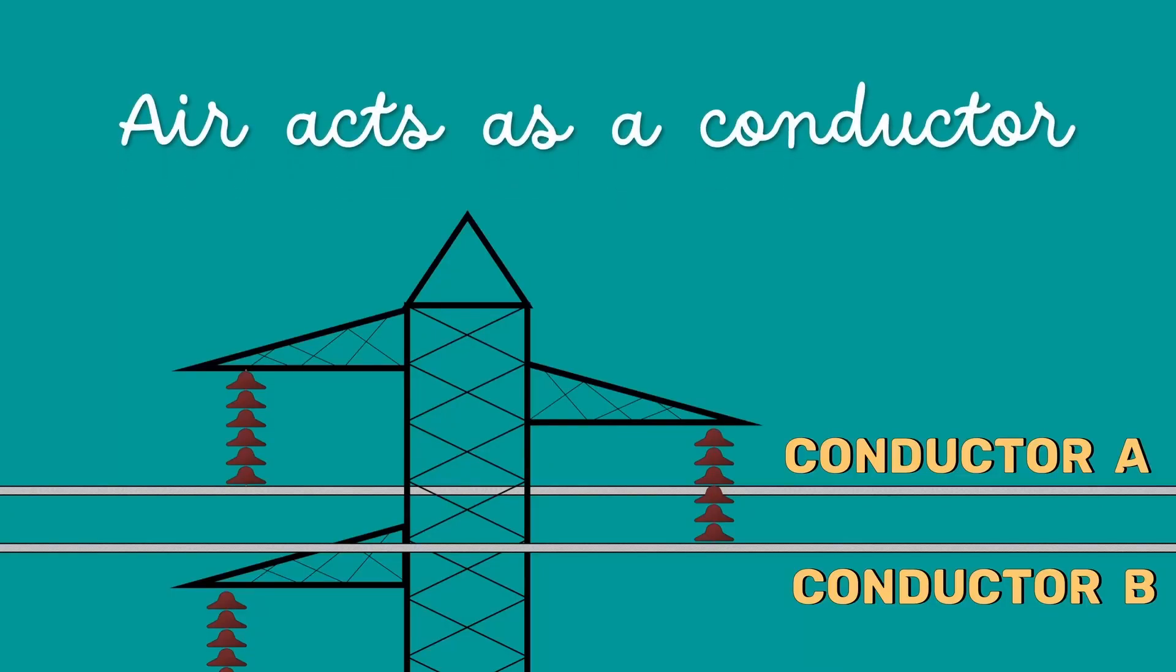We know that current is the flow of electrons. Here in the air, the electrons are flowing. This means air acts as a conductor here. This part of air will have a violet glow. Along with the violet glow, it will also have a hissing noise and the production of ozone gas.